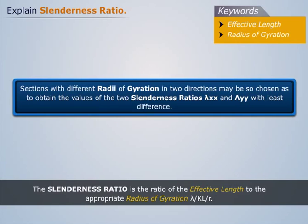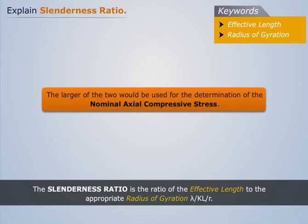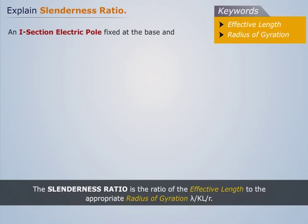Sections with different radii of gyration in two directions may be chosen to obtain values of the two slenderness ratios, lambda XX and lambda YY, with the least difference. The larger of the two would be used for the determination of the nominal axial compressive stress.